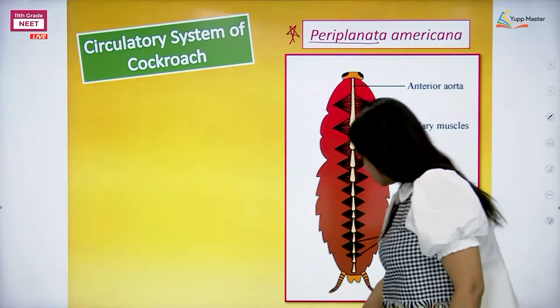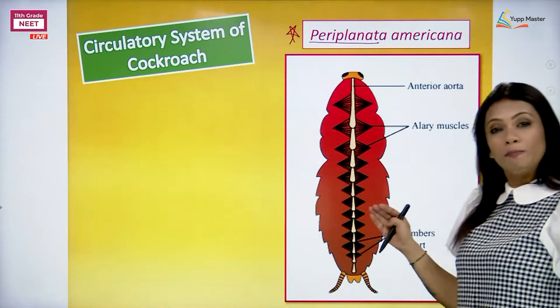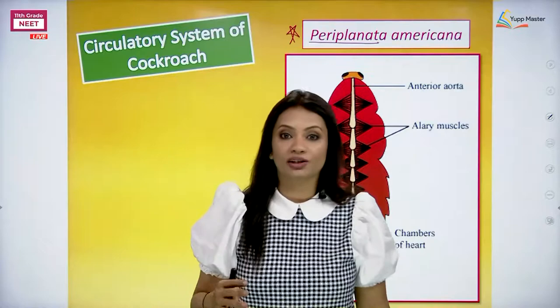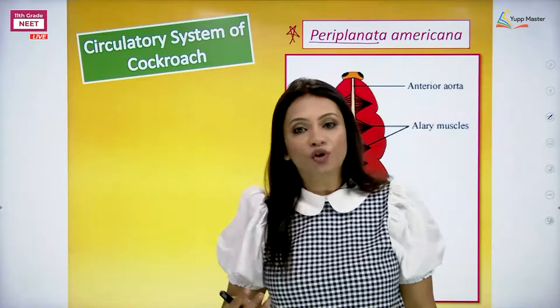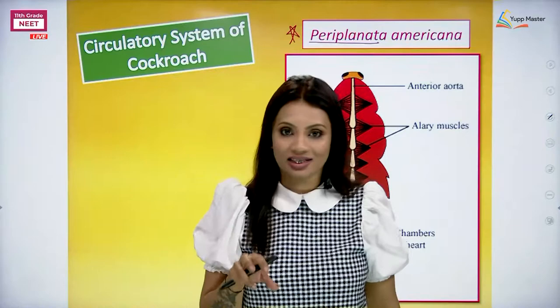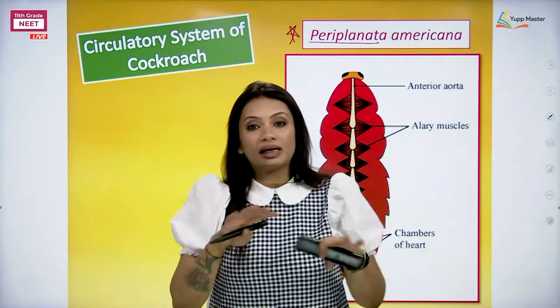When we talk about the circulatory system, remember this is an arthropod and all the insects or all the animals belonging to the phylum Arthropoda are going to be having an open circulatory system. Open circulatory system means that the circulating fluid, which we can call as blood, is actually going to be filling the whole body cavity, and whatever body organs and tissues are inside the organism are completely bathed in blood.